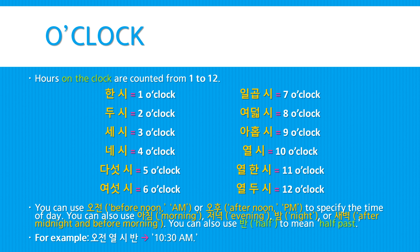You can also use 오전, meaning 'before noon' or AM, or 오후, meaning 'afternoon' or PM, to specify the time of day. You can also use 아침 (morning), 저녁 (evening), 밤 (night), or 새벽 (after midnight and before morning). And you can even use 반, meaning 'half', to mean 'half past' with any hour. For example: 오전 열 시 반 — 10:30 AM.